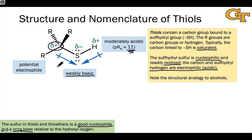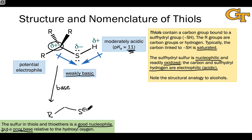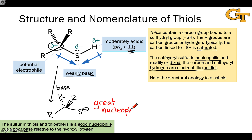If we deprotonate the sulfhydryl group — which is relatively easy to do in the presence of a base due to this relatively low pKa — we end up with what's called a thiolate, which is the sulfur analog of an alkoxide. And if the sulfhydryl sulfur is a good nucleophile, then the thiolate sulfur is naturally a great nucleophile. You see thiolates being used, for example, in SN2 reactions and other contexts where we want to form sulfur-carbon bonds with electron donation from the negatively charged sulfur.